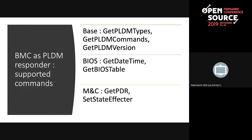Coming back to the physical limitation: MCTP requires multi-master support in I²C if we are implementing MCTP over SMBus I²C. If you are using LPC in your systems, is there bi-directional support in the hardware? I think it probably makes use of KCS interrupts to kind of enable that.